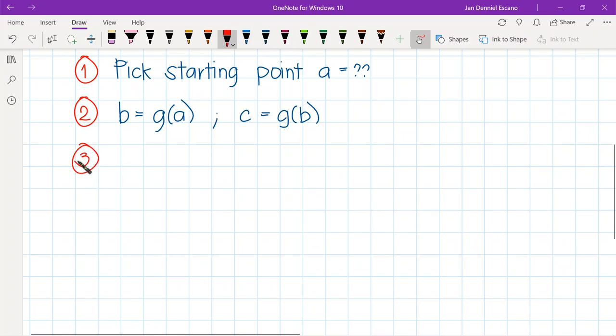After that, the next step that we'll use is denoted as p hat, which is equal to a minus (b minus a) squared all over (c minus 2b plus a). So it is similar with Aitken's delta square method.